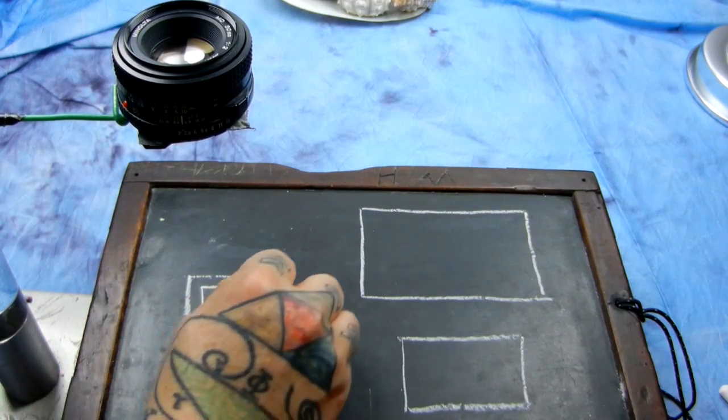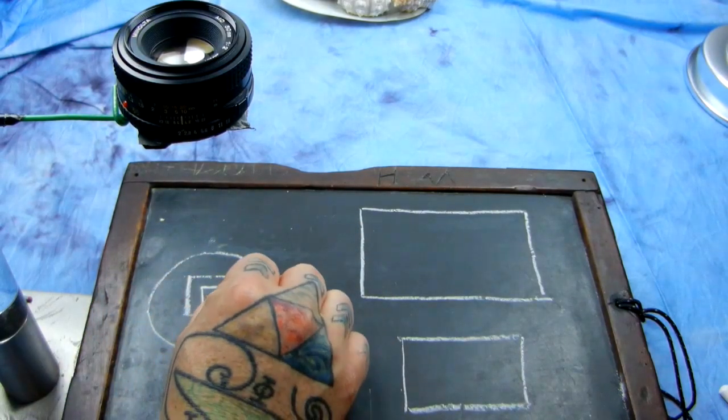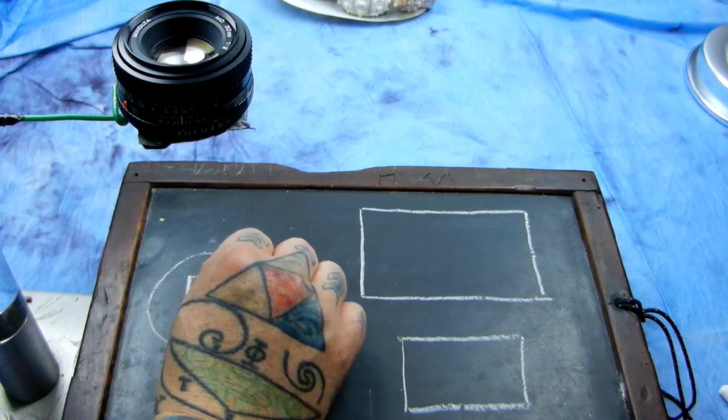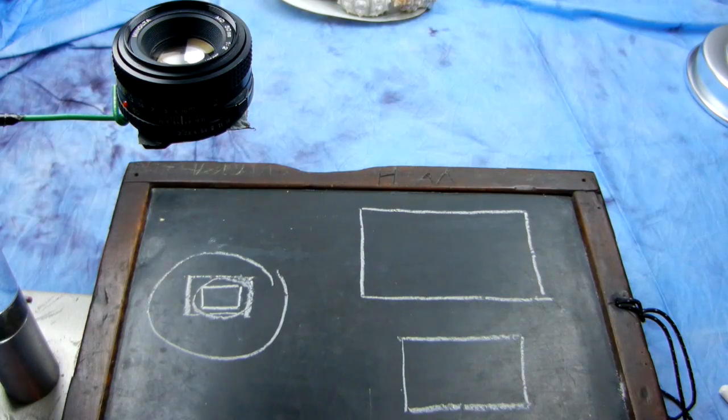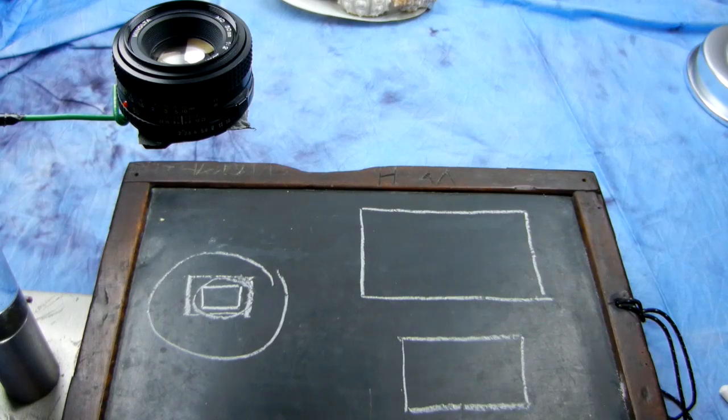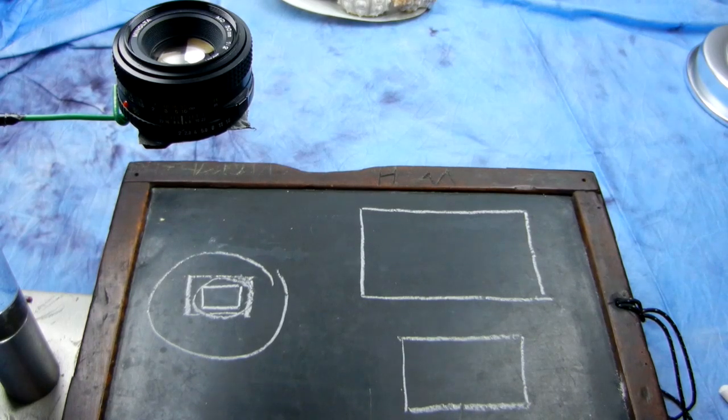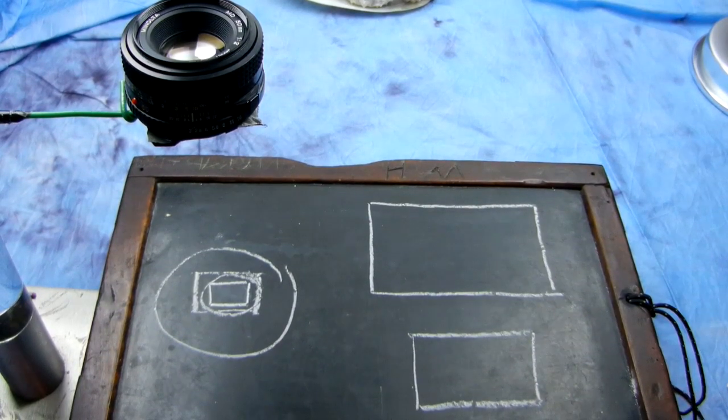Every lens is stupid. Whether it feeds the auto-focusing data, vibration reduction or not, the lens doesn't give a damn whether there's an FX sensor or a DX sensor underneath it. Every lens, FX or DX, projects a circle of light. Now, if it's a DX lens on an FX sensor, obviously, your FX camera is going to auto-crop to DX mode. I think on the D810, DX crop sensor mode is 18 megapixels.